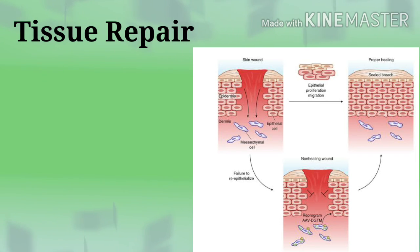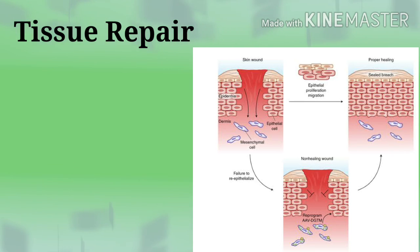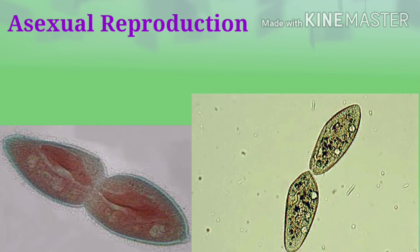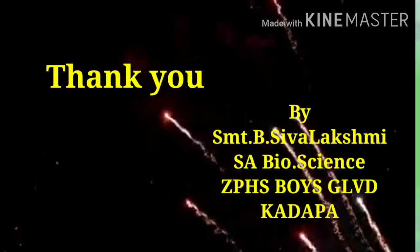Mitosis also enables tissue repair — wounds close by creating cells identical to those that were lost or injured. Additionally, asexual reproduction creates whole new organisms through mitosis alone.